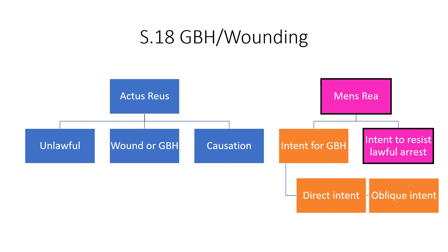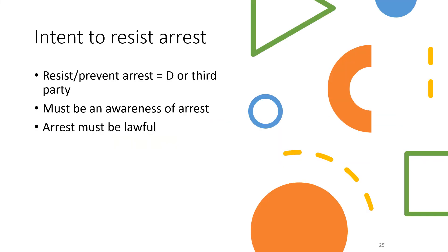The key difference between the mens rea of section 18 and section 20 — apart from no recklessness — is the concept of intent to resist lawful arrest. This may be easier to prove, and so may be the basis on which a charge is laid. Intent to resist arrest covers resisting or preventing the arrest of either the defendant or a third party, and the defendant must be aware that an arrest is taking place and that the arrest is lawful.